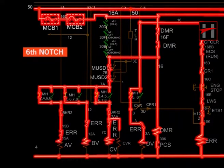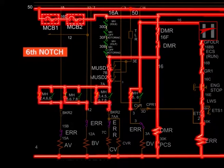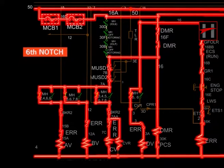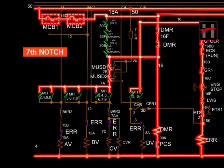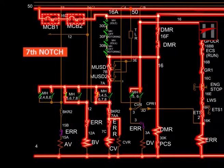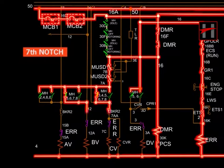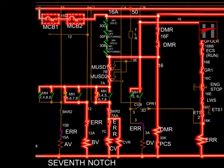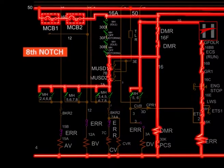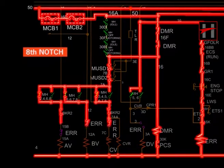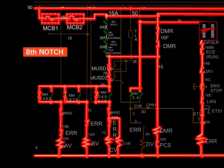In the sixth notch, the flow of current is like this. This is the current flow in the eighth notch.